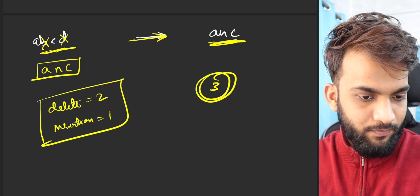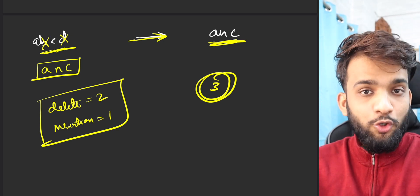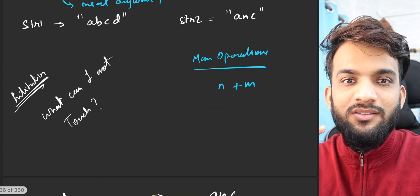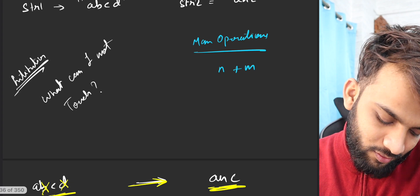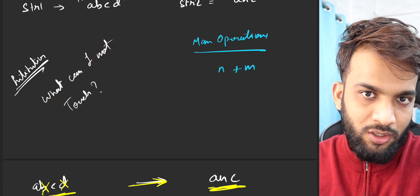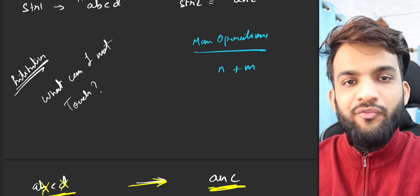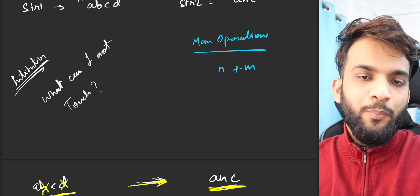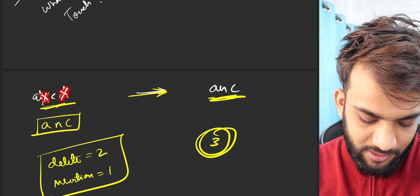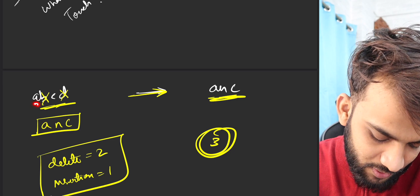If I have two deletions and one insertion, I think I will be taking a total of three operations and I can convert this given string to this particular given string. So how do you minimize the number of operations? What is the intuition striking your head? It's like, what can I not touch? Because if I touch the minimal portions...